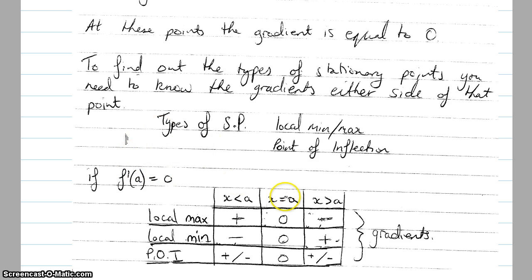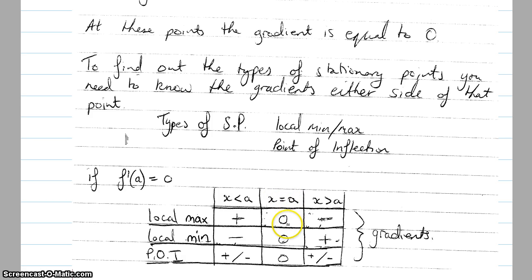All these values in the table are gradients. When x equals A, there's a gradient of zero.